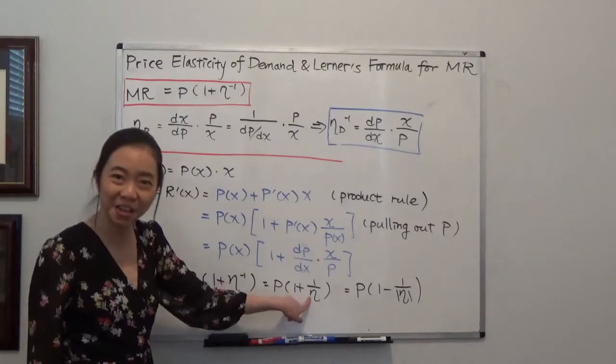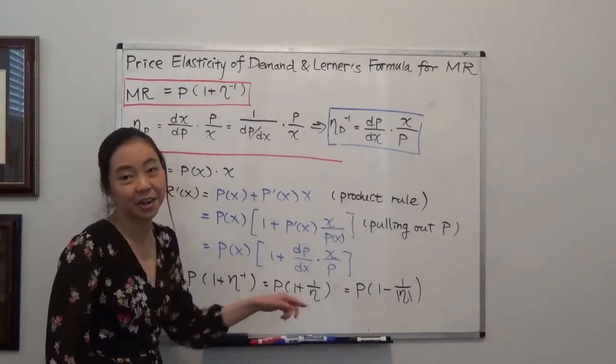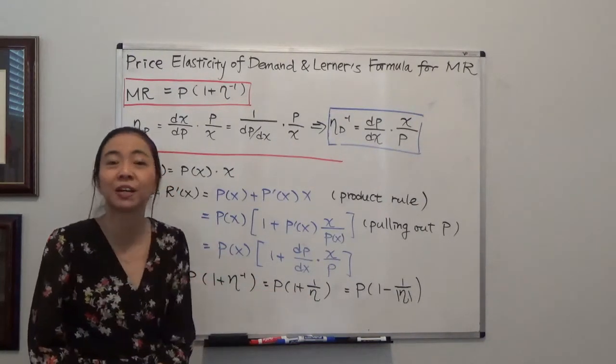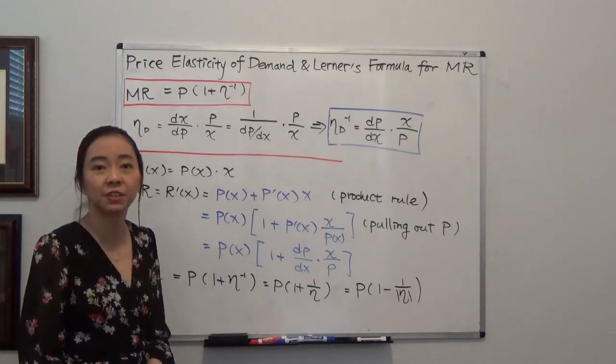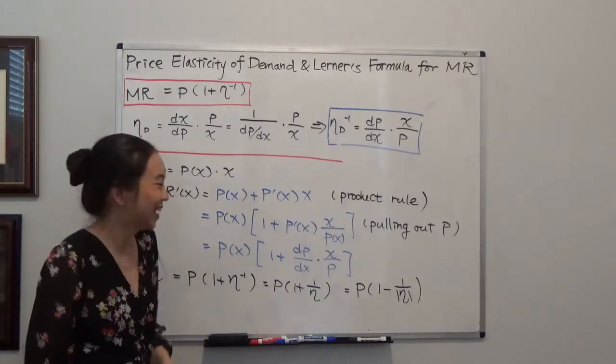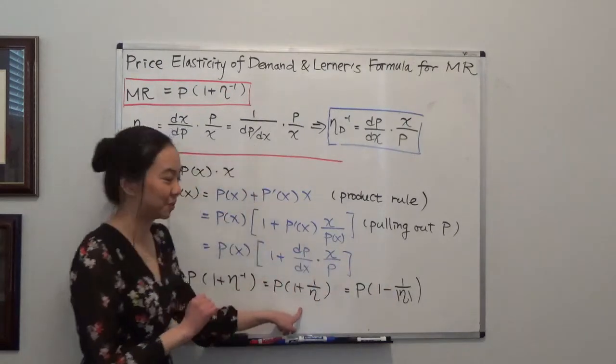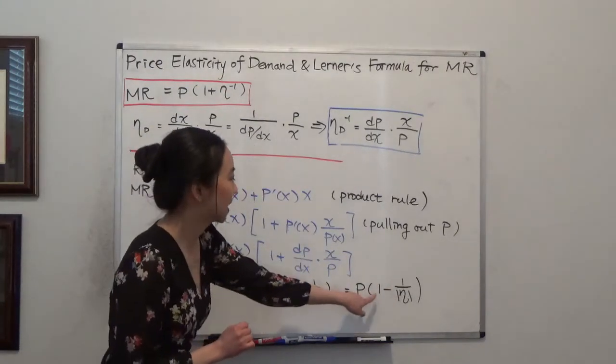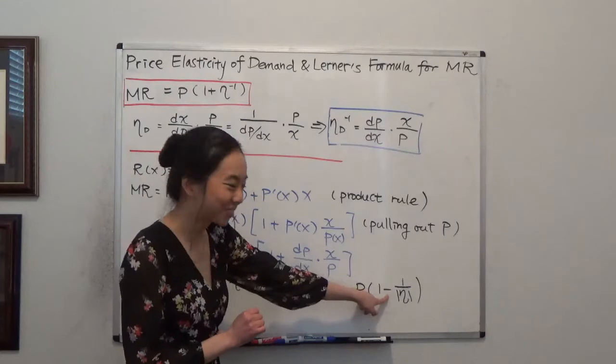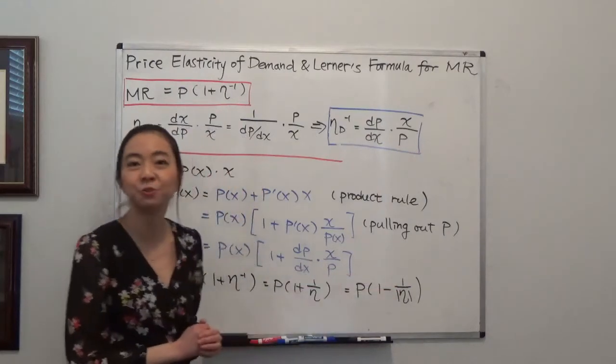And remember this eta is negative. So if you're like me, I'm used to expressing my price elasticity of demand as a positive number. Then you can use absolute value. So it will become p times 1 minus 1 over the absolute value of eta.